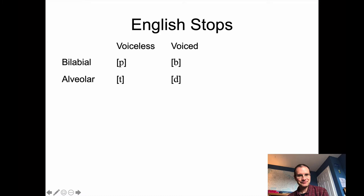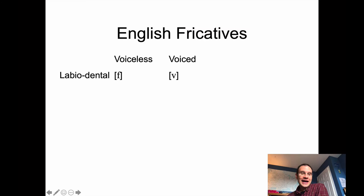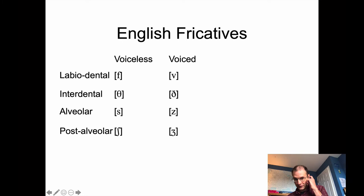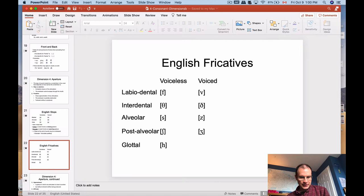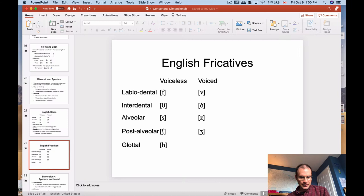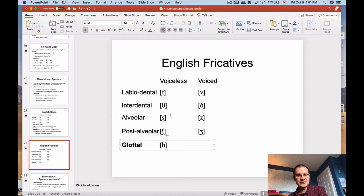English has quite a few fricatives. At the labiodental place of articulation, the voiceless one is F and the voiced one is V. We have the interdentals theta and ETH, the alveolars S and Z, the post-alveolars ESH and EZH, and lastly a glottal fricative — just H. For the glottal fricative, you're making a relatively narrow channel with your vocal folds and getting the turbulent noise there. The glottis is considered a place of articulation of its own, and H is a voiceless glottal fricative.